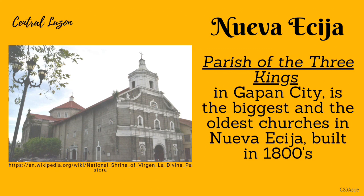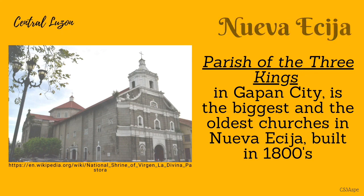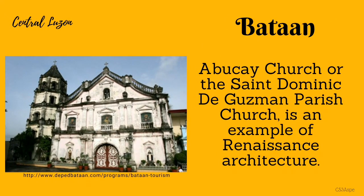The Parish of the Three Kings in Gapan City is one of the biggest and oldest churches in Nueva Ecija, built in the 1800s and is an example of Western architecture. The Bukay Church, or the St. Dominic de Guzman Parish Church, established in 1587, has a five-layer bell tower ornamented with semicircular art windows and is an example of Renaissance architecture.